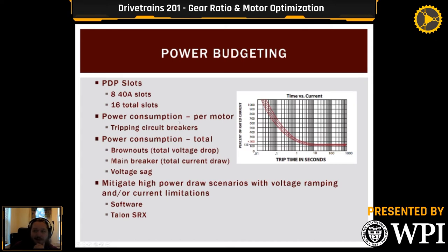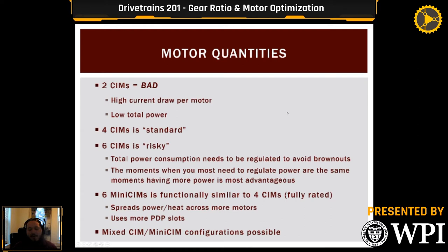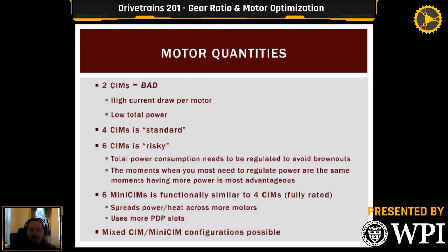On motor quantities — I wrote this with CIM motors in mind, but it applies to NEO and Falcon as well. Two CIM motors total in your drivetrain is what I call the rookie mistake: teams do it once in their rookie year and never again. It's just not enough power with only two CIMs — you get very high current draw per motor and slow total power. Maybe in a low traction game like 2009 Lunacy you could revisit this, but for any basic game in the past decade, stay away from two motors.